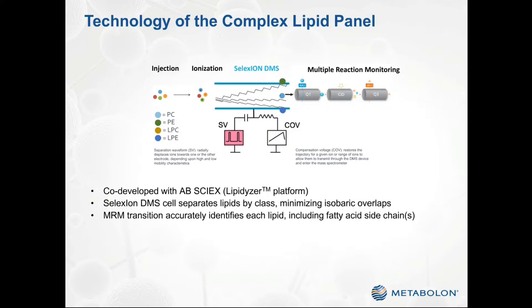At Metabolon, our solution to these challenges is our Complex Lipid Panel, or CLP. It is based on the commercially available Lipidyzer platform, which was co-developed with AB Sciex. The platform consists of several analytical steps that together permit the routine and confident identification and quantitation of hundreds of lipids. The lipid-containing solutions are directly infused into the ionization source of a QTRAP 5500 mass spectrometer. Upon ionization, the lipids pass through a select ion differential mobility separation cell — a process in which voltages are applied that selectively permit the passage of only a specific lipid class at any given time. This minimizes the overlap between isomeric species across different lipid classes.